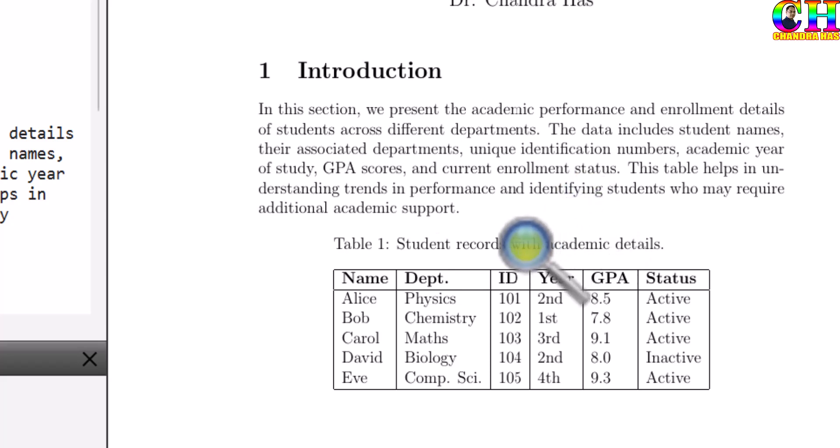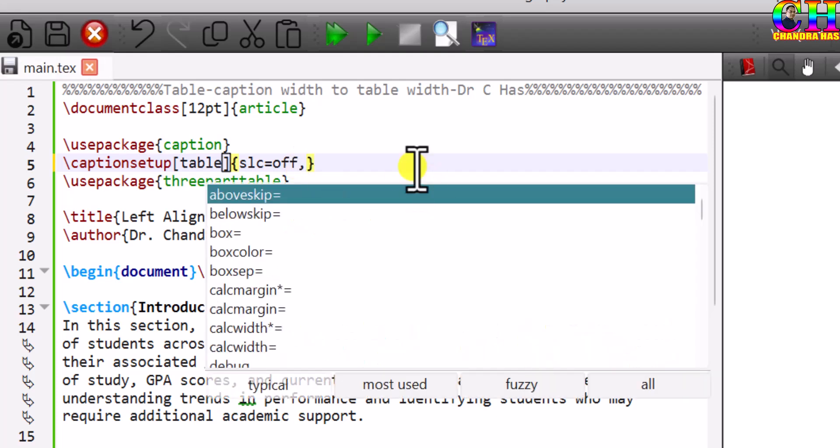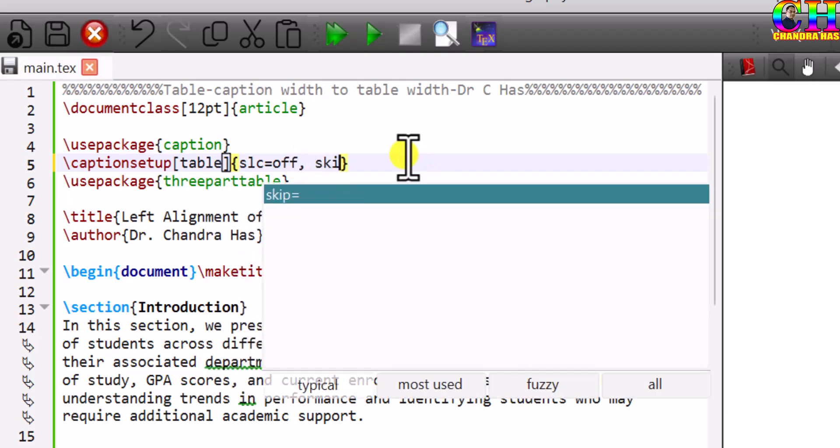This vertical spacing between caption and table we can reduce. Just use skip. Let's check with two-point.